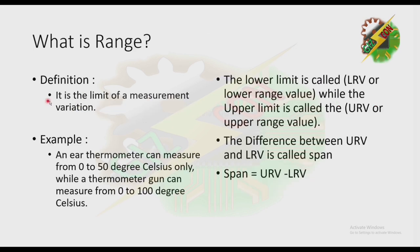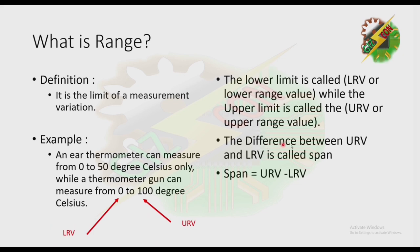What is Range? By definition, it is the limit of measurement variation. For example, an air thermometer can measure from 0 to 50 degrees Celsius only, while another thermometer can measure from 0 to 100 degrees Celsius. The lower limit is called LRV or Lower Range Value, while the upper limit is called URV or Upper Range Value. The difference between URV and LRV is called span. Span is equivalent to URV minus LRV.